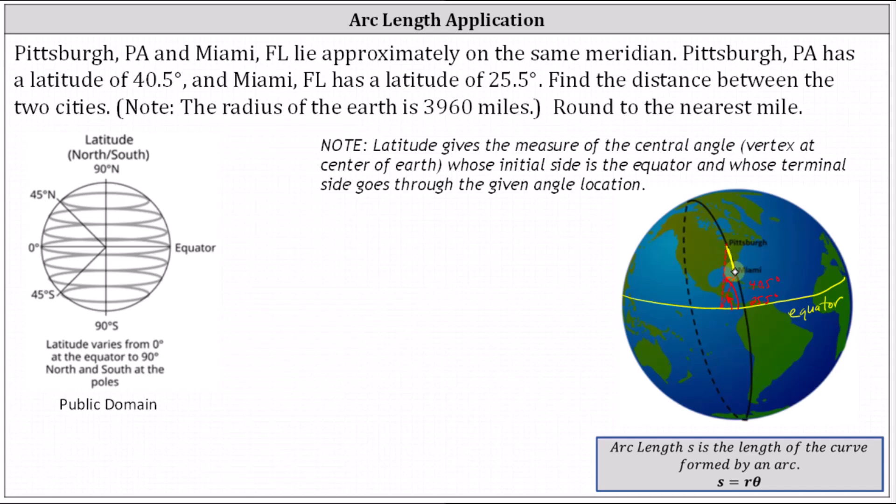To do this, we need to find the angle between the two cities. Recall the arc length formula is S equals R theta, where S is the arc length, R is the radius, and theta is the angle, but the angle must be in radians.